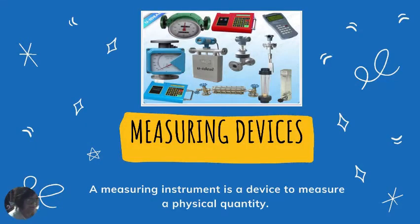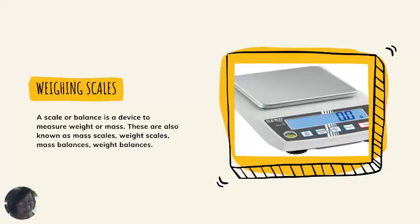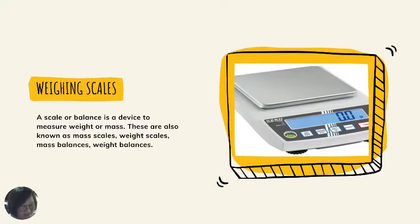Next: measuring devices. A measuring instrument is a device to measure a physical quantity, and there are plenty of them. Next: weighing scales. A scale or balance is a device used to measure weight or mass, also known as mass scales, weight scales, mass balances, or weight balances.